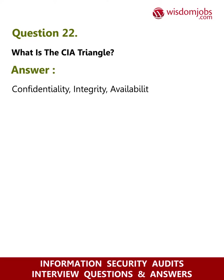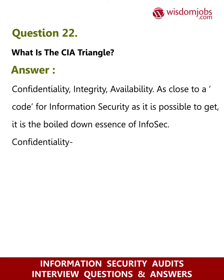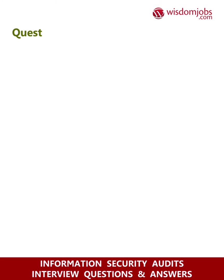Question 22: What is the CIA triangle? Answer: Confidentiality, Integrity, Availability — as close to a code for information security as it is possible to get. It is the boiled-down essence of infosec: confidentiality — keeping data secure; integrity — keeping data intact; availability — keeping data accessible.